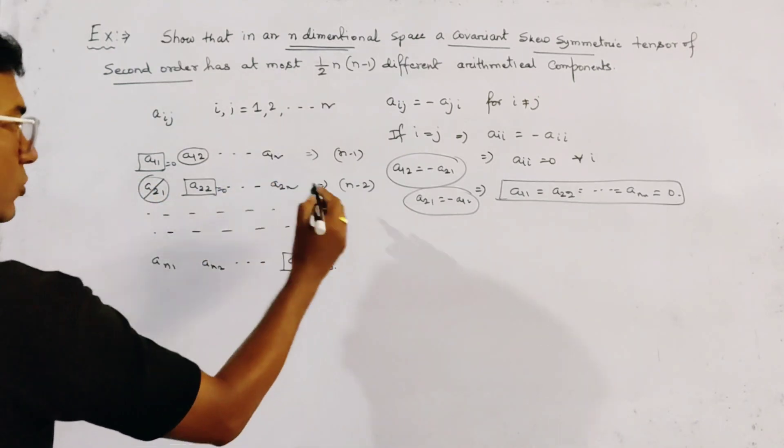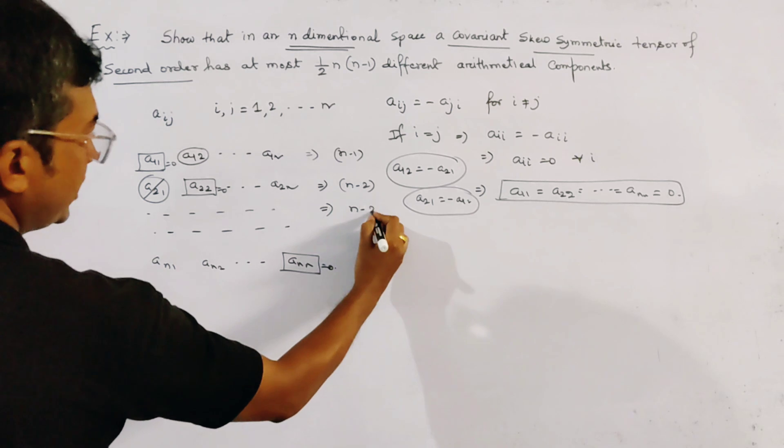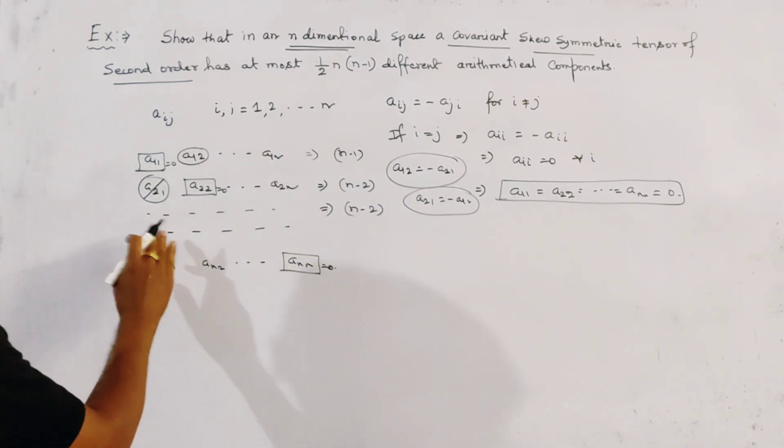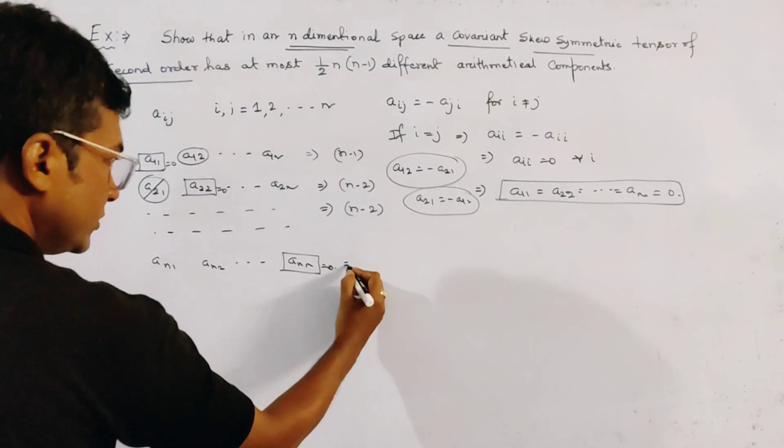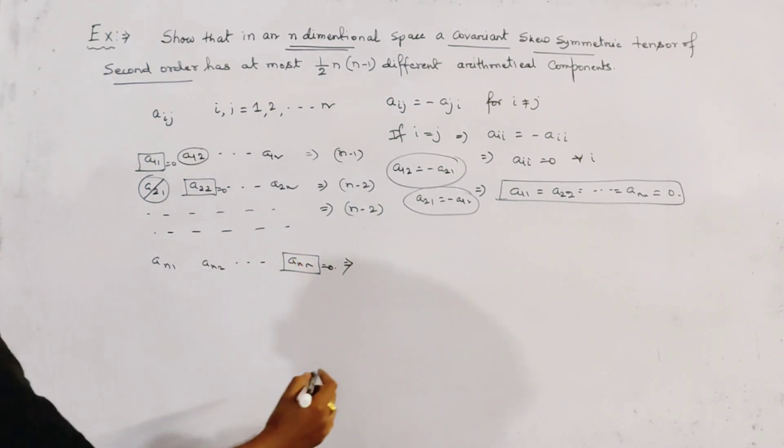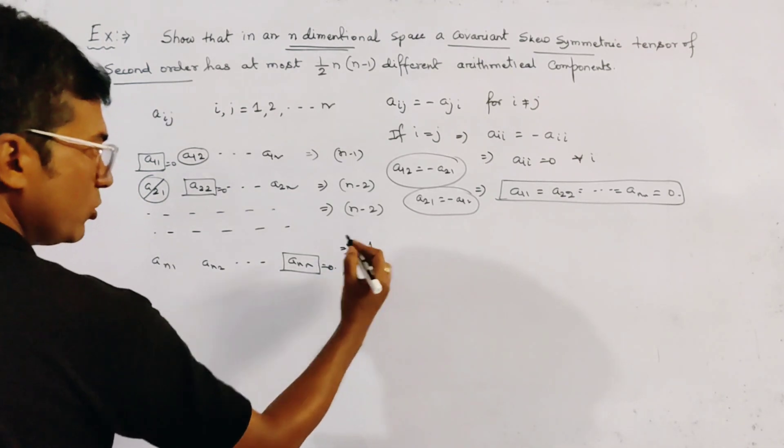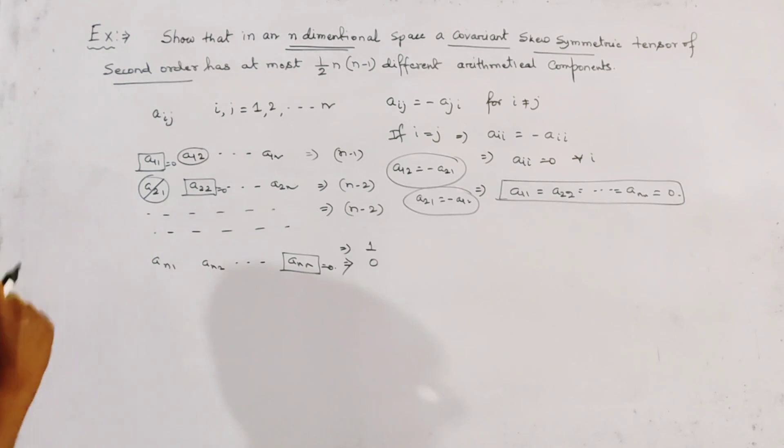And similarly in the third row we get n-3 different arithmetical components and so on. When we arrive at the last row, then there will be 0 arithmetical components. In the previous row there will be only 1 arithmetical component which are different.